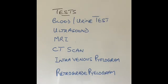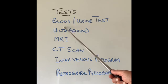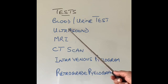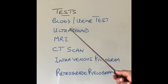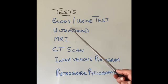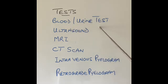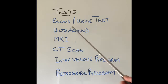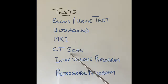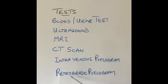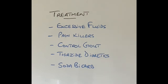What tests can be performed to diagnose kidney stones? After examining the patient, a doctor may order blood tests to check kidney function and electrolyte levels such as calcium and phosphate. Urine tests can check for blood and infection. The main imaging tests used to look for kidney stones include ultrasound scan, MRI scan, CT scan, and in some places, intravenous pyelogram or retrograde pyelogram.